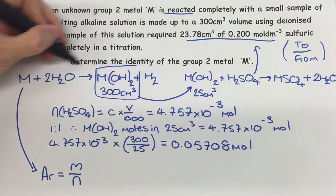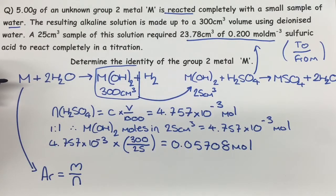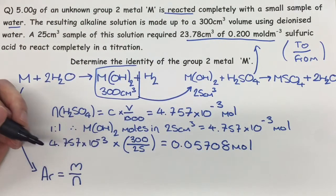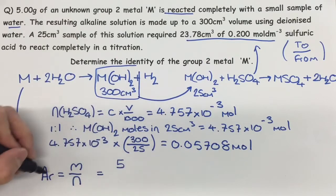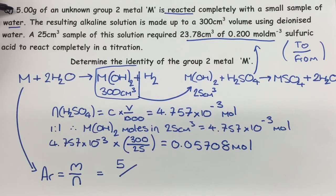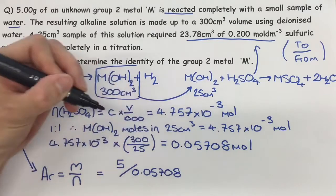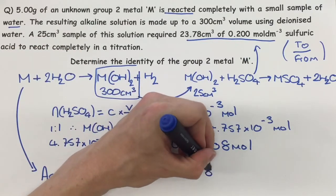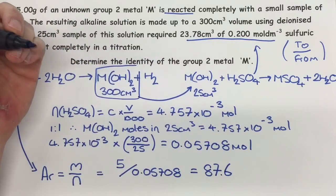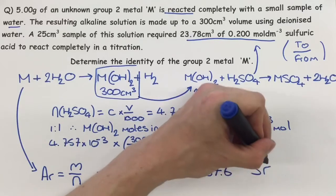Since in the equation the ratio of metal hydroxide to metal is 1 to 1, this is also the number of moles of the metal that was initially dissolved and made into the 300 cm³ solution. So the AR of this unknown group 2 metal is going to be the 5 grams from the start of the question divided by 0.05708, giving a final answer of 87.6. This is the AR of our unknown group 2 metal.